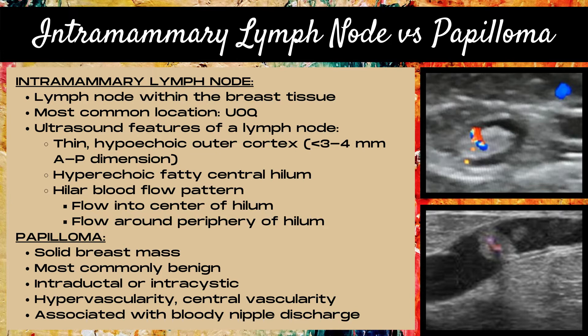A papilloma is a solid breast mass. Most commonly they're benign, and they are located either intraductally within a duct or intracystically within a cyst. Key features of a papilloma on ultrasound are hypervascularity and central vascularity, and papillomas are associated with bloody nipple discharge.